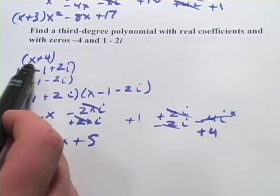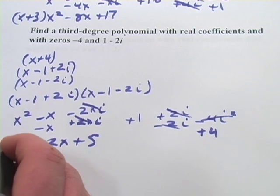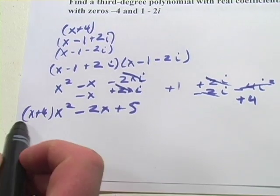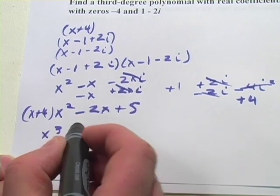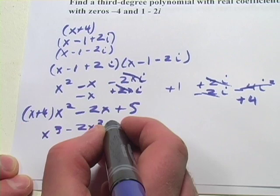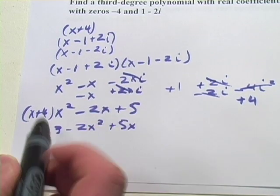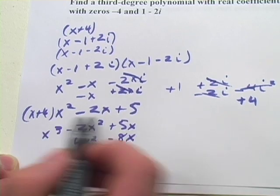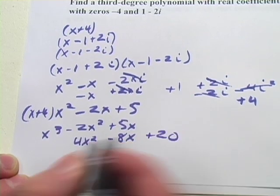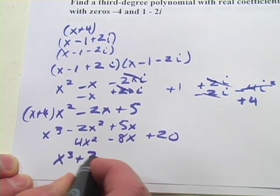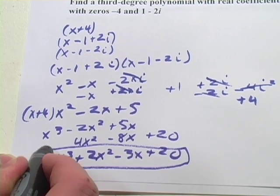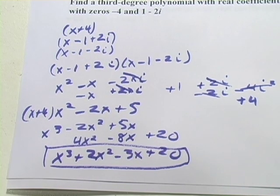Now we multiply in x plus 4. x times x squared is x cubed, x times negative 2x is negative 2x squared, x times 5 is 5x. Then 4 times x squared, 4 times negative 2x, and 4 times 5. That gives us x cubed plus 2x squared minus 3x plus 20. That is how you find a third-degree polynomial from some of its zeros.